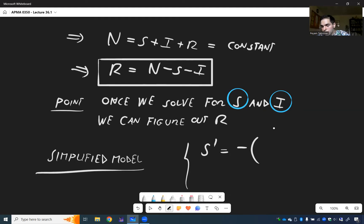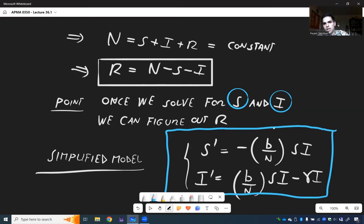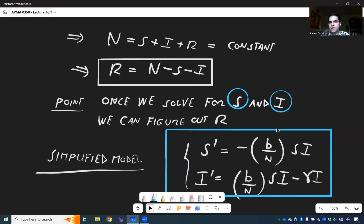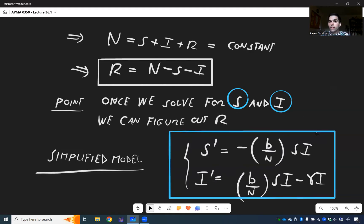So in other words, all we need to solve for is S and I. So our simplified model now is simply S prime is minus B over N S I, and I prime is B over N S I minus gamma I. And in the next video, we will see how to simplify this even further.